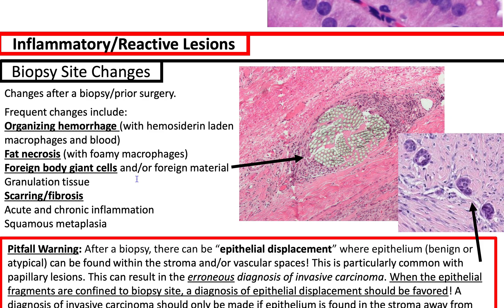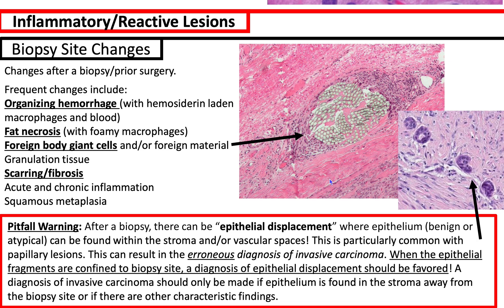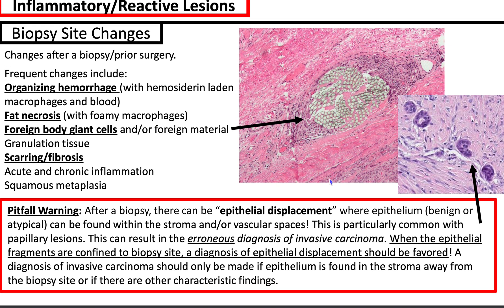Foreign body giant cells can be seen, as well as foreign material. Dr. Shatberg has a picture of suture material in the breast tissue. You can also have granulation tissue, scarring fibrosis, acute and chronic inflammation, and squamous metaplasia.